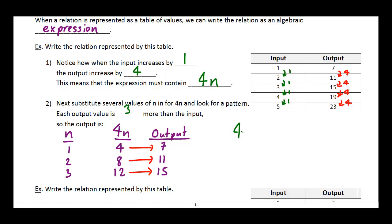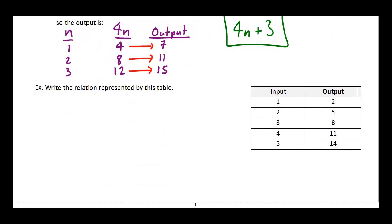So the final output must be 4n plus 3. My input is n, my output is 4n plus 3. Let's try these same steps again here with this other output. Remember, the first thing we're going to look at is we're trying to find a pattern between our output values. So as each of these increases by 1, what's happening with my output values? Well, this is an increase of 3, so is this, so is this, and so is this. So somewhere in my expression, my expression must contain 3n.